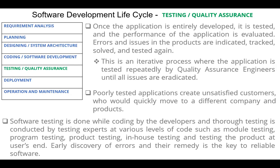Errors and issues in the products are indicated, tracked, sorted, and tested again. This is an iterative process where the application is tested repeatedly by quality assurance engineers until all issues are eradicated.